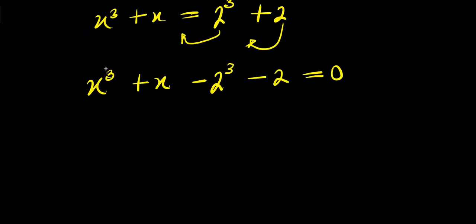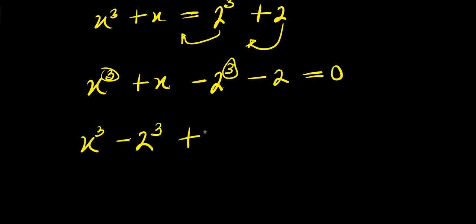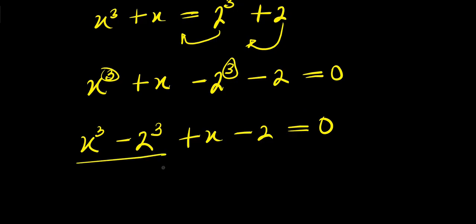So right now, x cubed minus 2 cubed plus x minus 2 equals 0. I can expand this.